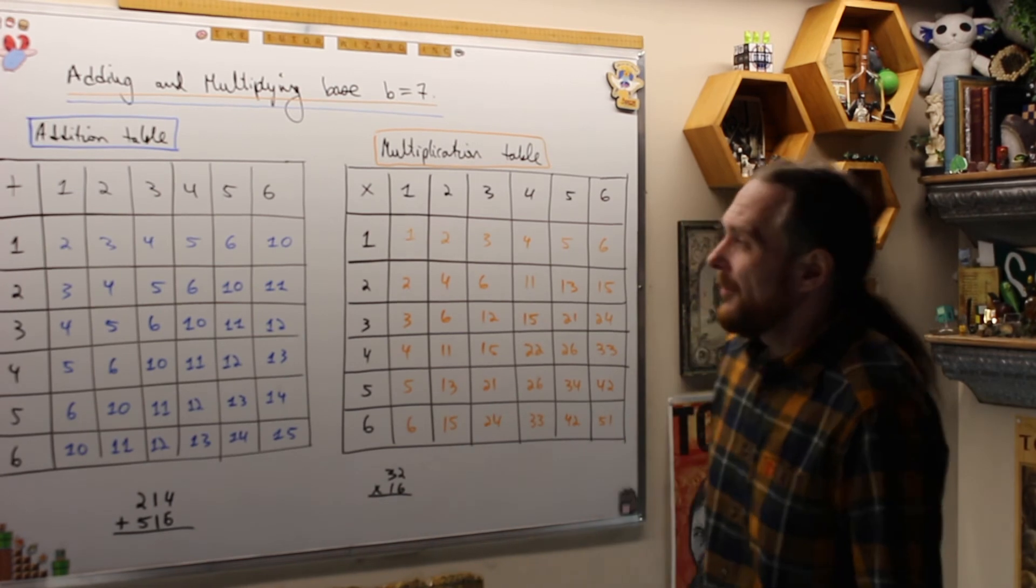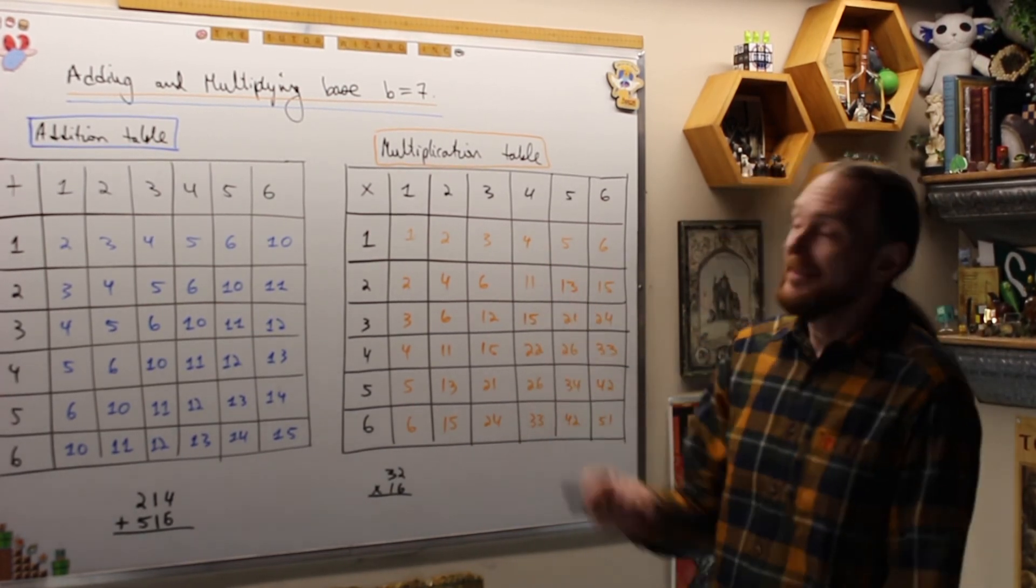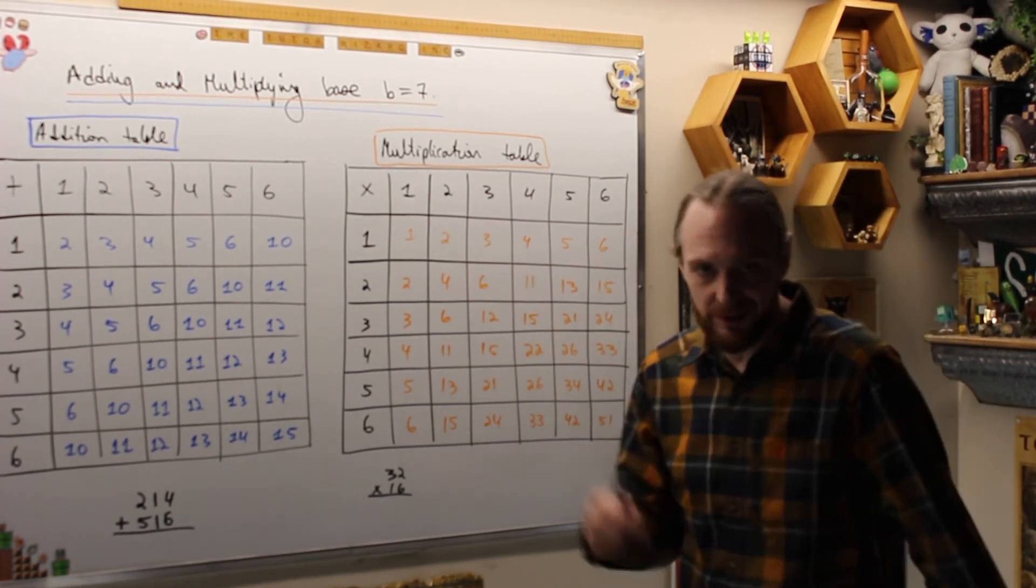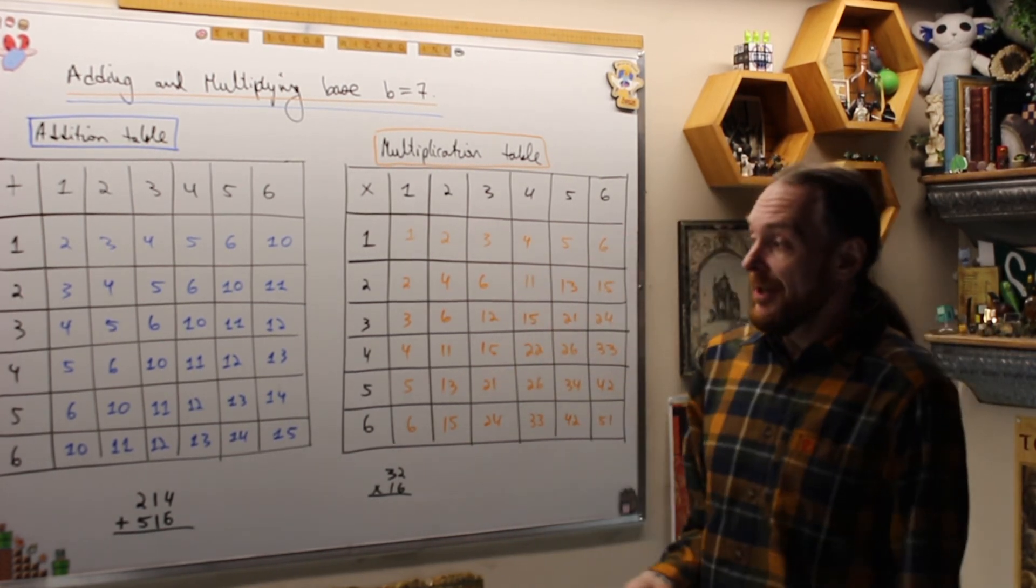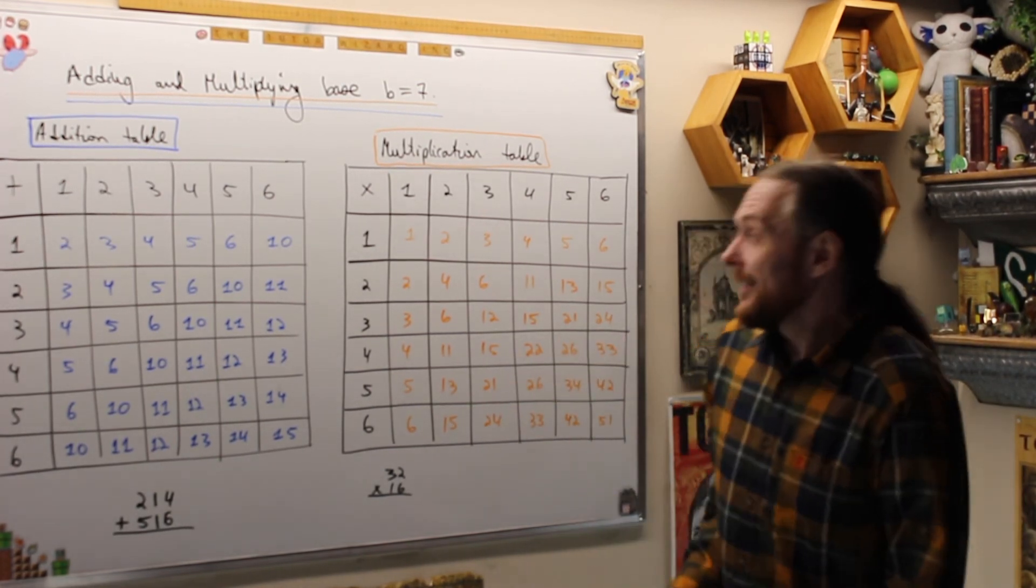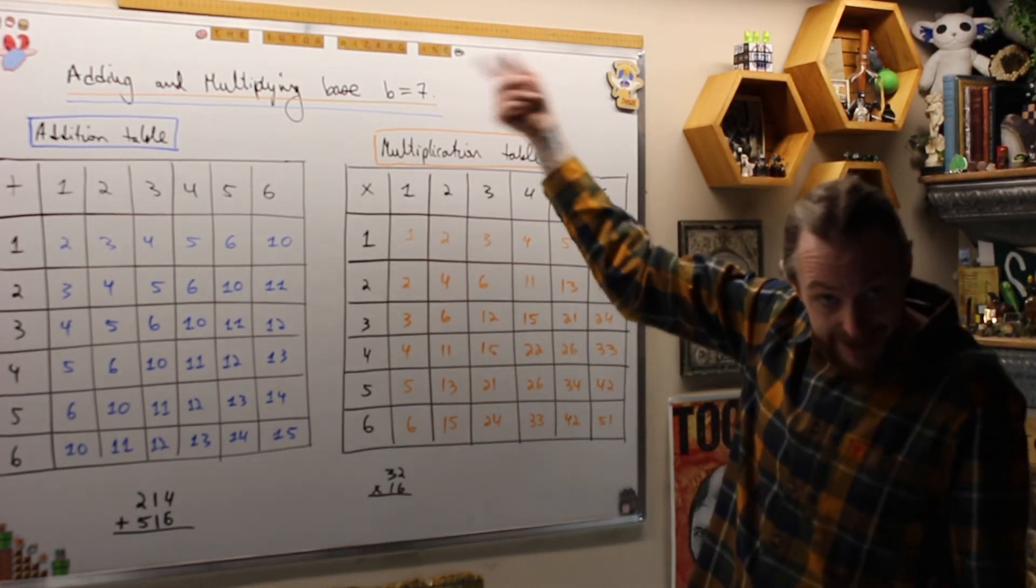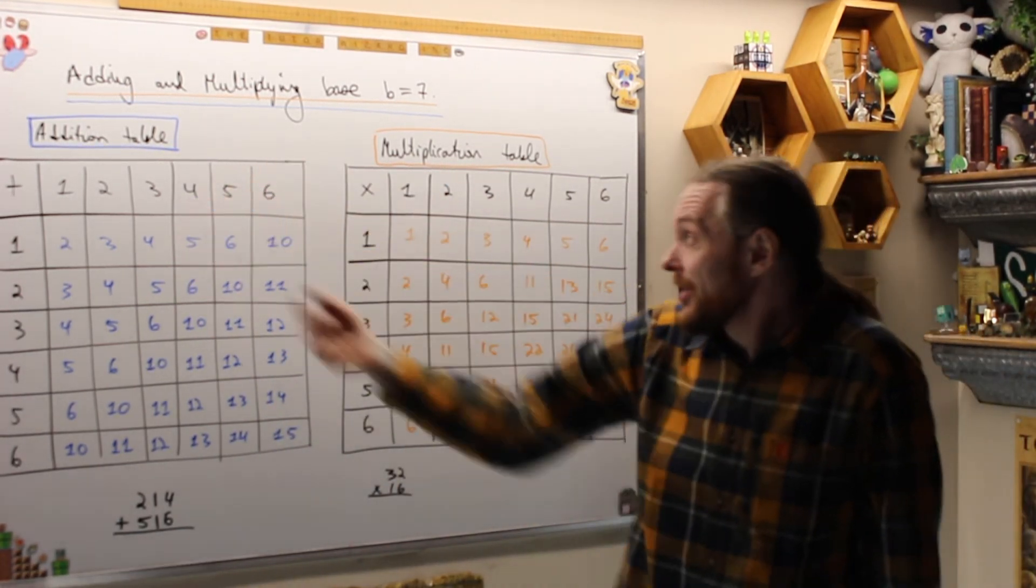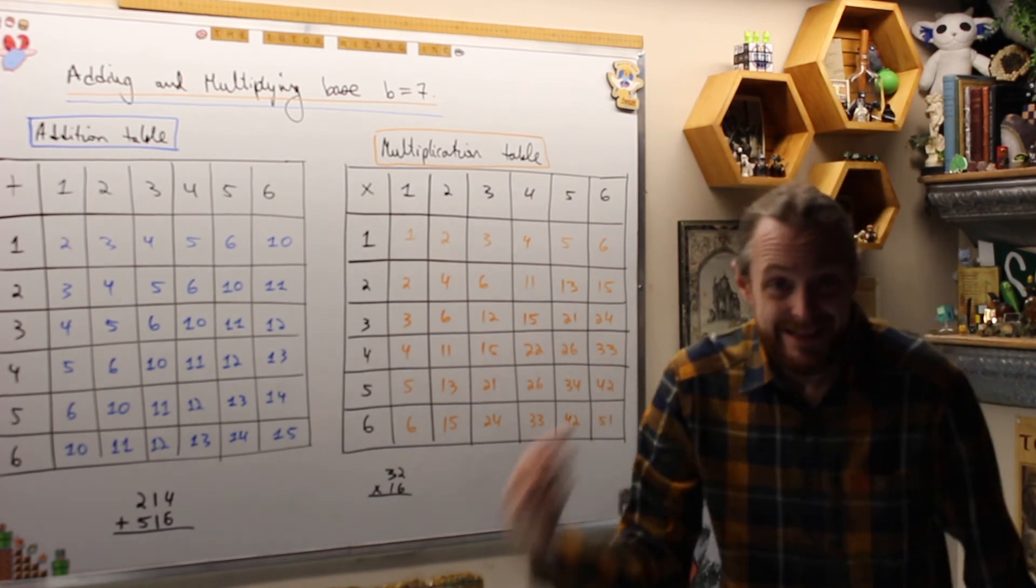Alright, to finish off, what we're going to do is adding and multiplying base 7. It's the same for base 11. We'll do this eventually or in another video. But for now, to finish off, I'll show you how to do the arithmetic in other bases. What the key is, is once we pick a base, B equals 7, we have to relearn or memorize or write for ourselves the addition and multiplication tables base 7.